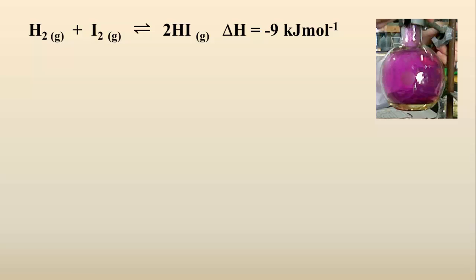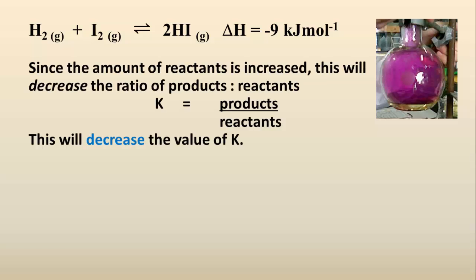Now there is one more effect of increasing temperature to consider. Since the amount of reactants is increased in this reaction, there will be an overall decrease in the ratio of product to reactants. In other words, the value of the equilibrium constant K will decrease. Remember, increasing the denominator of a fraction will cause the value of K in this case to become smaller, because dividing by a bigger number makes the overall answer a smaller value.